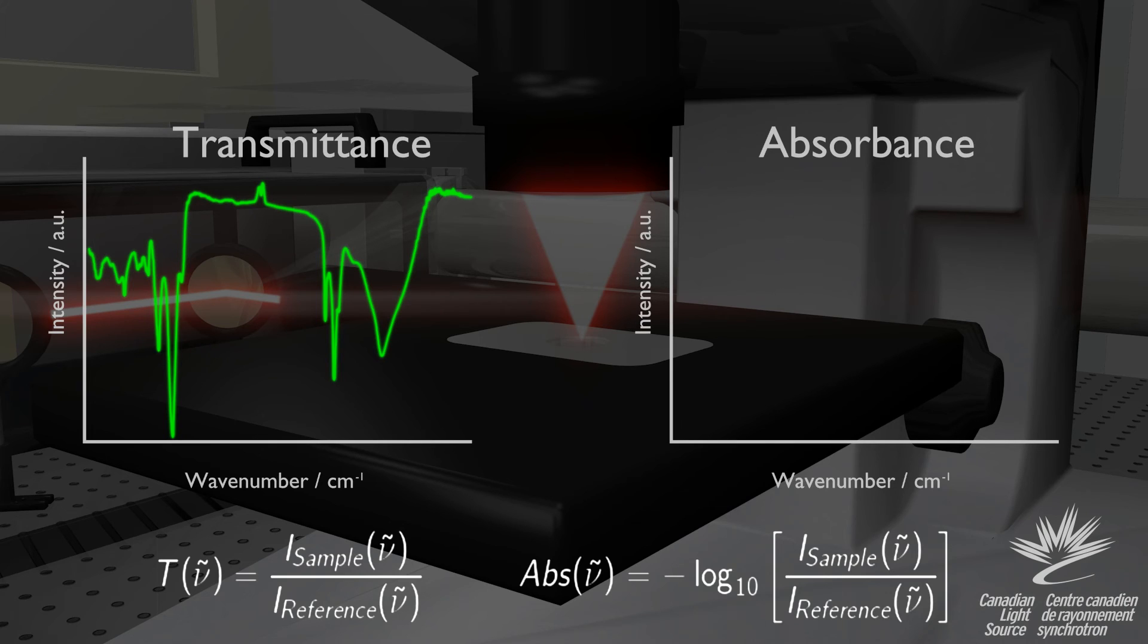This information can also be represented as an absorbance spectrum, in which case the peaks indicate absorbed light and identify features in the sample.